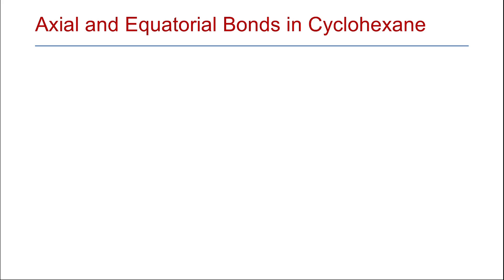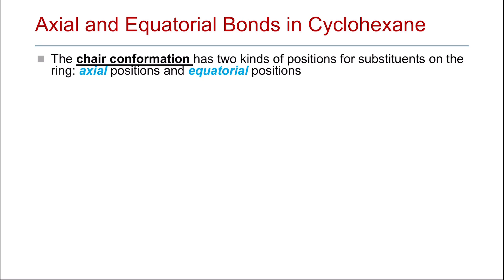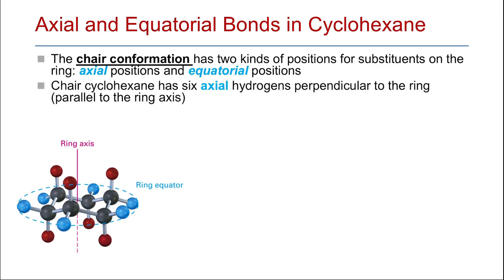Each carbon atom in the ring will have two other groups bonded to it. In the chair conformation, there are two kinds of positions for substituents on the ring: the axial position and the equatorial position. When you draw the chair conformation of cyclohexane, you have the ring equator and the ring axis, which is perpendicular to the ring equator. There are six axial hydrogens, which are perpendicular to the ring equator and parallel to the ring axis.